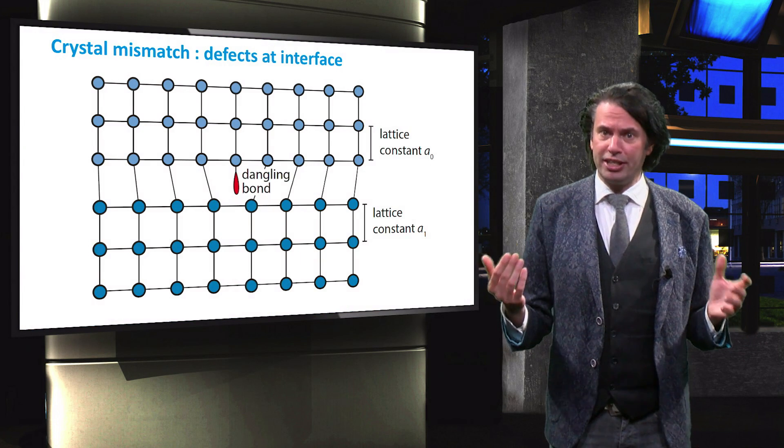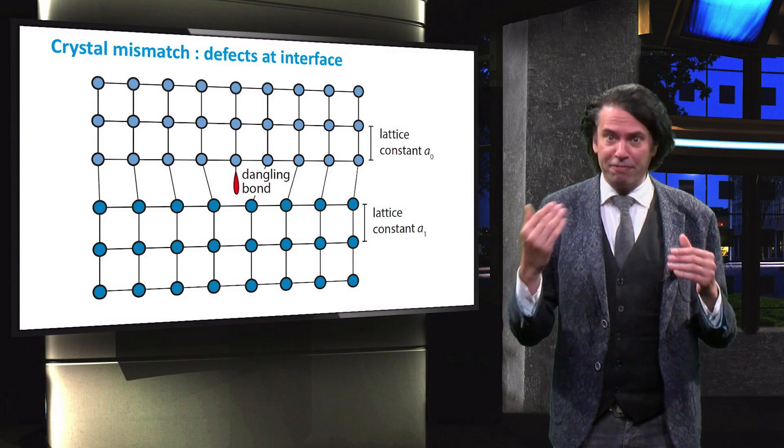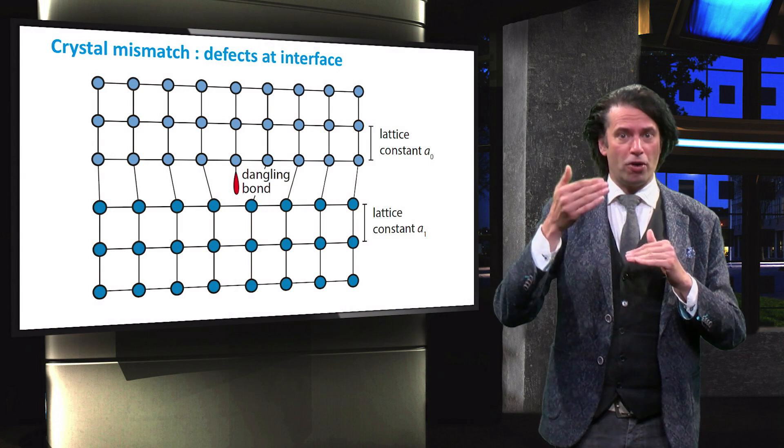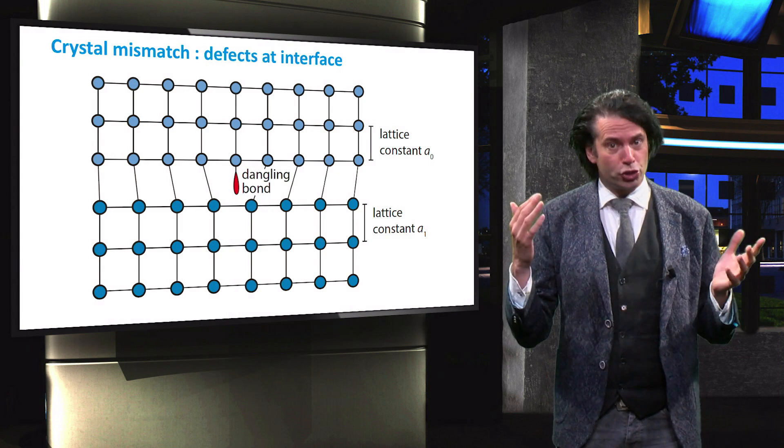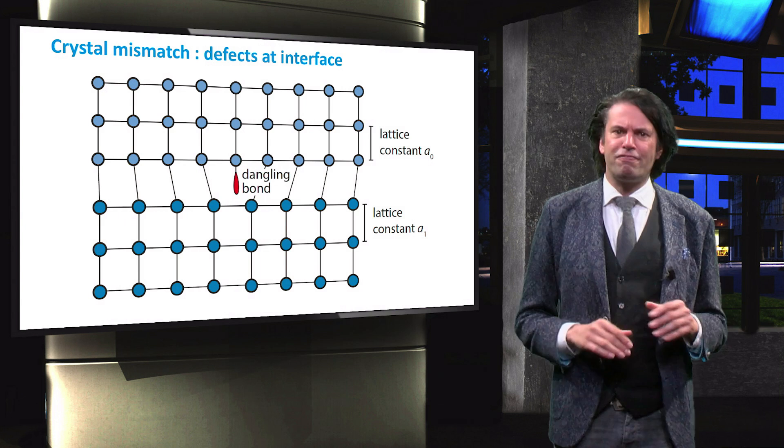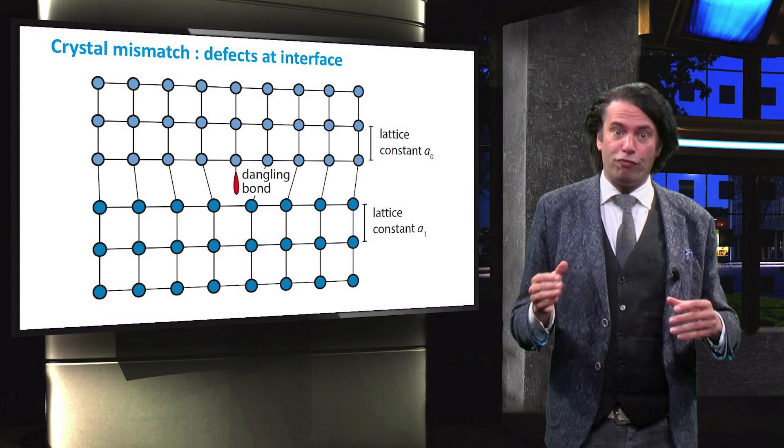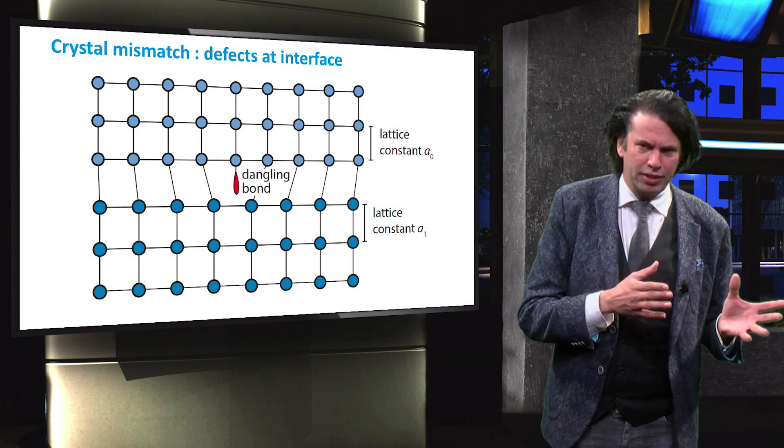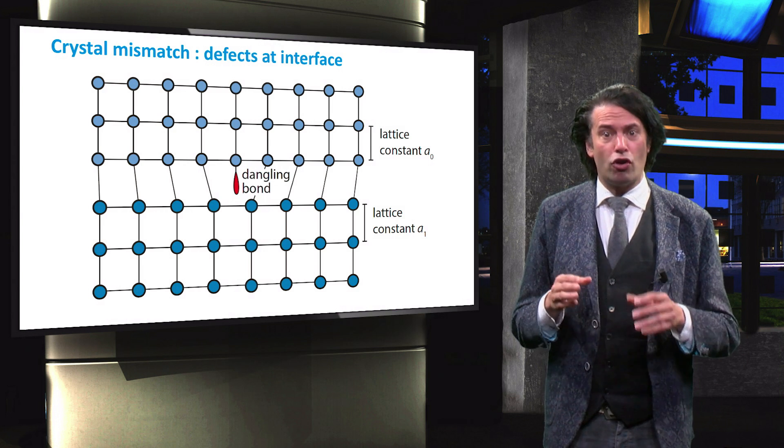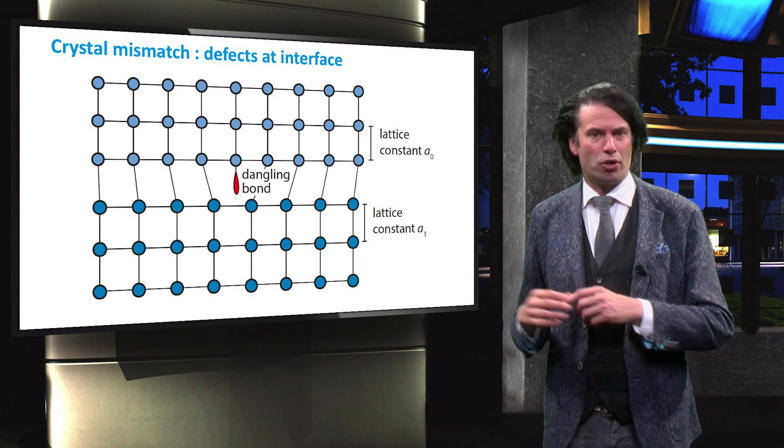This growth can result in interface defects if different materials are grown on top of each other, such as in multijunction devices. In this figure the lattice constant of a bottom material A1 is larger than the lattice constant of a top material A0.